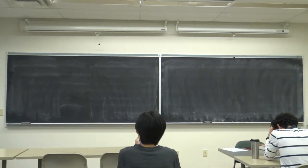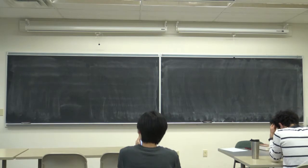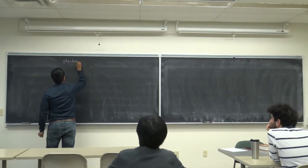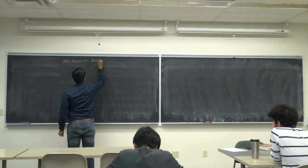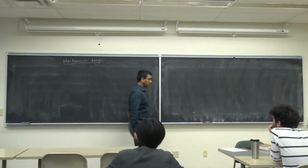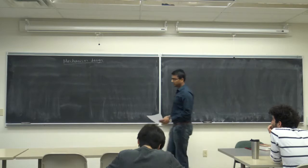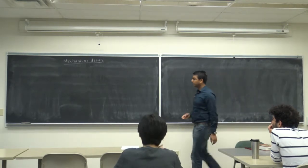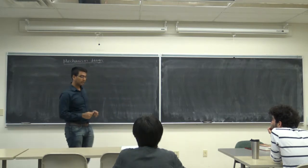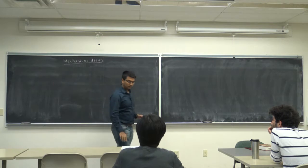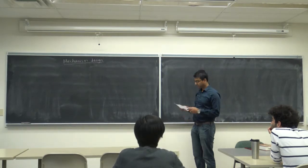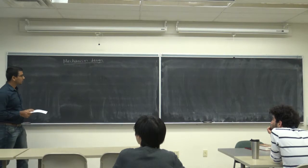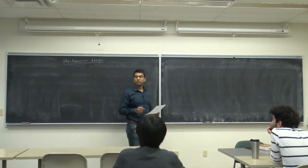Today's topic is mechanism design. We'll start with Bayesian game with communication, where we'll study a generalization of correlated equivalents, and then move on to more complex topics in mechanism design. The simplest topic is a strict generalization of correlated equilibrium. Before starting this new set of topics, I want to motivate it by pointing out some applications that use mechanism design.